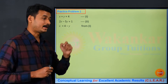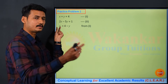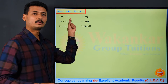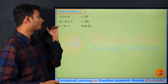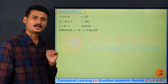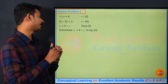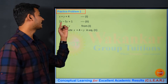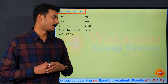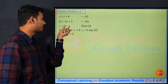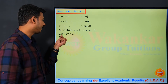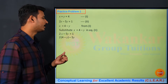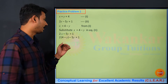Now we have the value of x which is 4 minus y, derived from equation number 1. We now substitute this value of x into the other equation — equation number 2 — which is 2x minus 5y equals 1. In place of x we substitute the value 4 minus y, giving us 2 into bracket (4 minus y) minus 5y equals 1. Because it is a binomial, the bracket is a must.